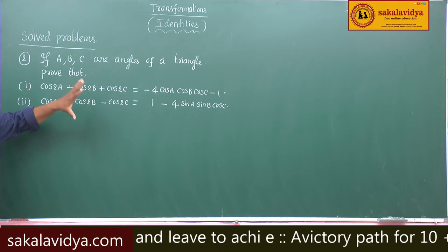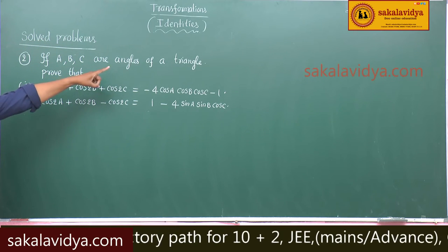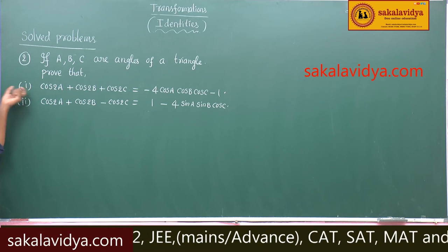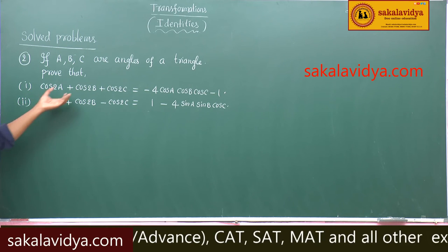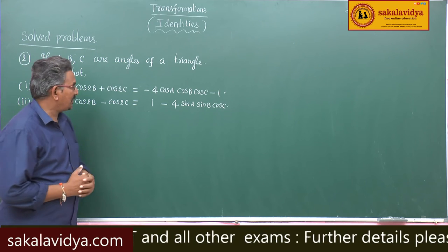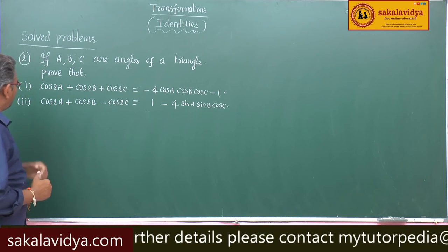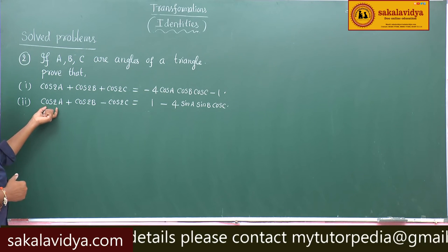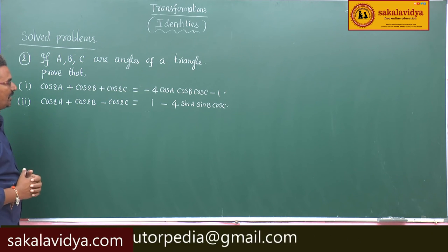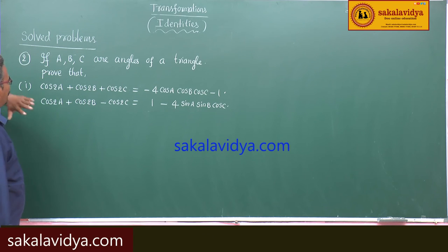Let us check the problems again. If a, b, c are angles of a triangle, then: first problem: cos2a + cos2b + cos2c = -4·cos(a)·cos(b)·cos(c) - 1. Second problem: cos2a + cos2b - cos2c = 1 - 4·sin(a)·sin(b)·cos(c). First, let us prove the first one.